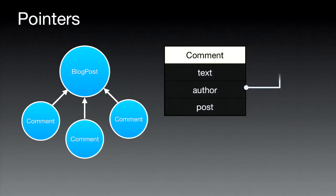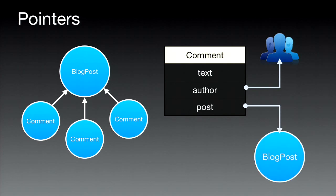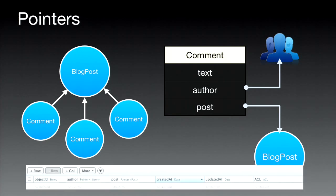Conceptually, a comment object has a text column (a string), an author column (a pointer to a Parse user), and a post column (a pointer to a blog post object). In the data browser, you can see the author column is a pointer to a Parse user, and the post column is a pointer to a blog post object. It's a really straightforward way to implement a one-to-many relationship using pointers.